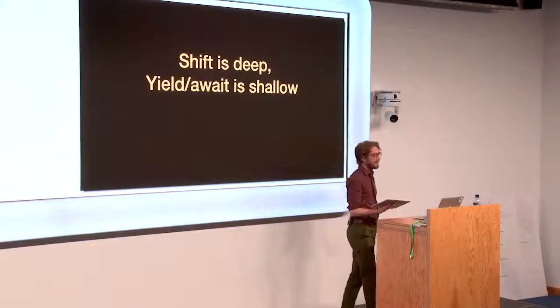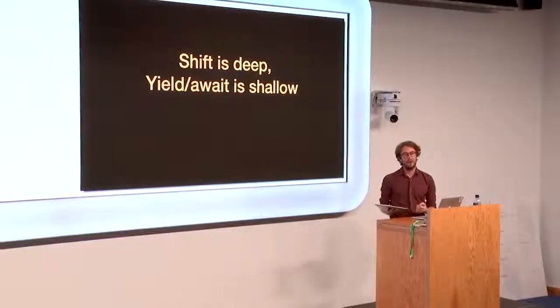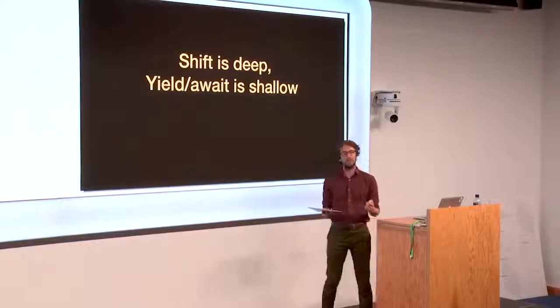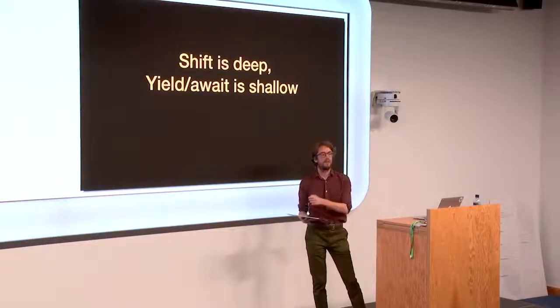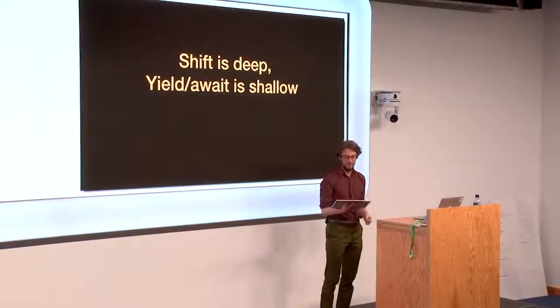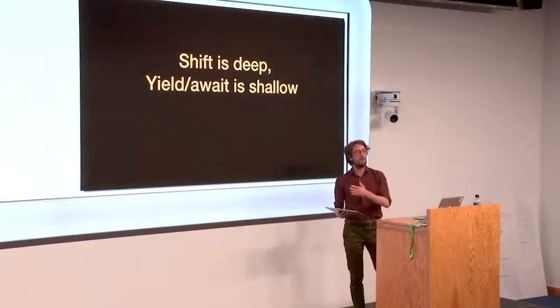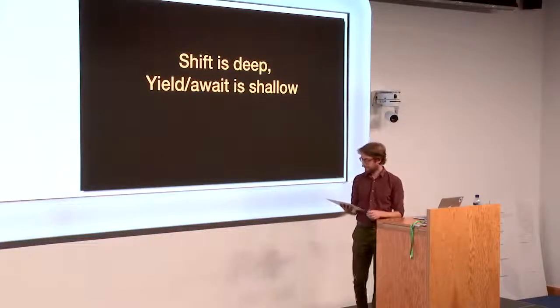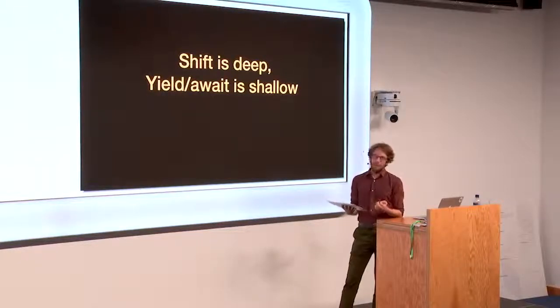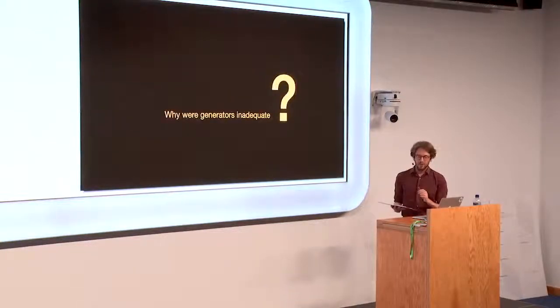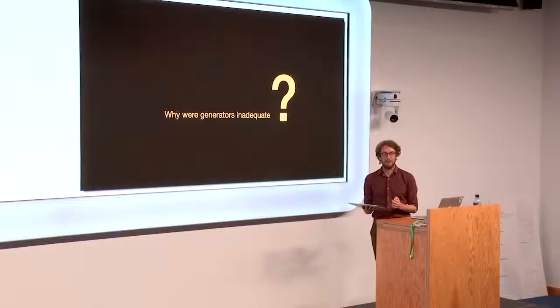And that's that shift is deep while yield and await is shallow. Okay, what do I mean by that? Well, in a generator in JavaScript, you can only call yield within the body of the generator. If you call another function within that generator, you can't call yield inside that function. Unless that function is itself a generator. That's not the case with shift and reset. So you can call shift at any depth. And that consideration will get you part of the way, but not all the way towards answering the following question. Which is why were generators inadequate for implementing React Fiber?